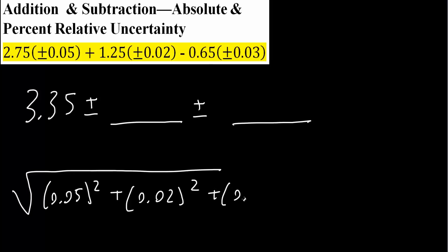plus 0.03, we square that number, and this whole thing, we take the square root of it, and we would get 0.0616. And so the absolute uncertainty will be 0.062.